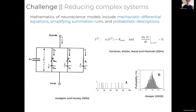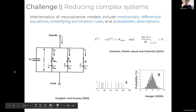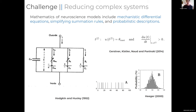Incorporating all these different scales creates a very complex system, which leads us to a core challenge: reducing complexity to enable efficient computation and simulation. The mathematics of neuroscience models can include mechanistic differential equations as in the classic Hodgkin-Huxley model, simplifying summation rules as in the integrate-and-fire neuron, or probabilistic discrete descriptions such as a Poisson process model where spikes fire based on some probability.